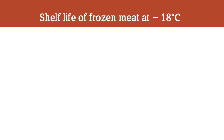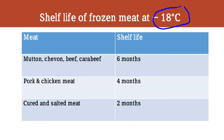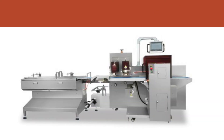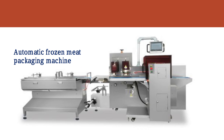The shelf life of frozen meat at minus 18 degrees Celsius depends on the type of meat. Mutton, chevon, beef, and buffalo can be kept for 6 months without damaging their qualities. Pork and chicken meat can be preserved for 4 months at minus 18 degrees centigrade, and cured and salted meat can be preserved for 2 months. This automatic frozen meat packaging machine is used to not only freeze but also package the meat products.